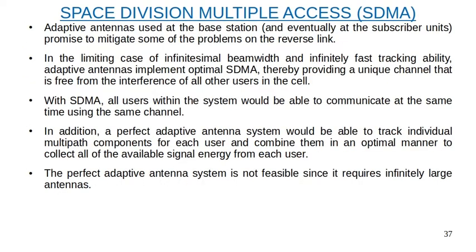Adaptive antennas used at the base station, and eventually at the subscriber units, promise to mitigate some of the problems on the reverse link. In the limiting case of infinitesimal beam width and infinitely fast tracking ability, adaptive antennas implement optimal SDMA, thereby providing a unique channel that is free from the interference of all other users in the cell.